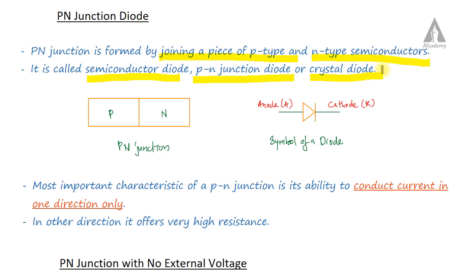In the PN junction diode structure, we are joining a p-type region and an n-type region together. This PN junction diode has two regions: an anode region and a cathode region.